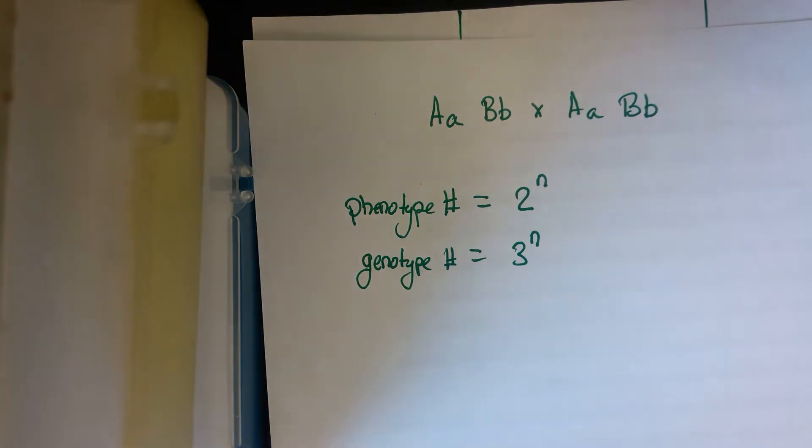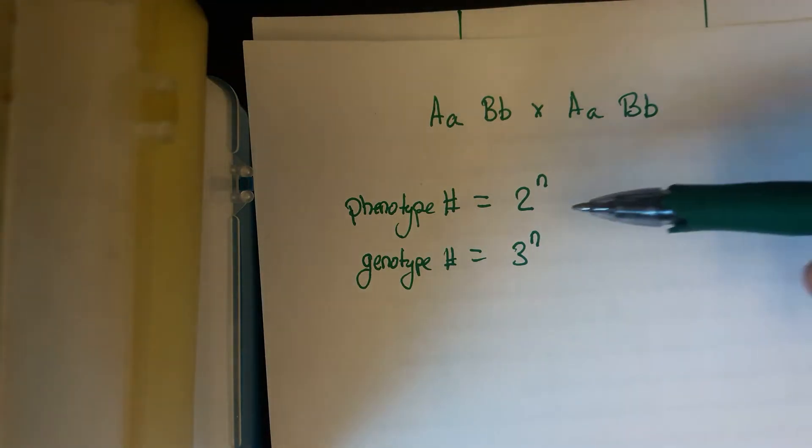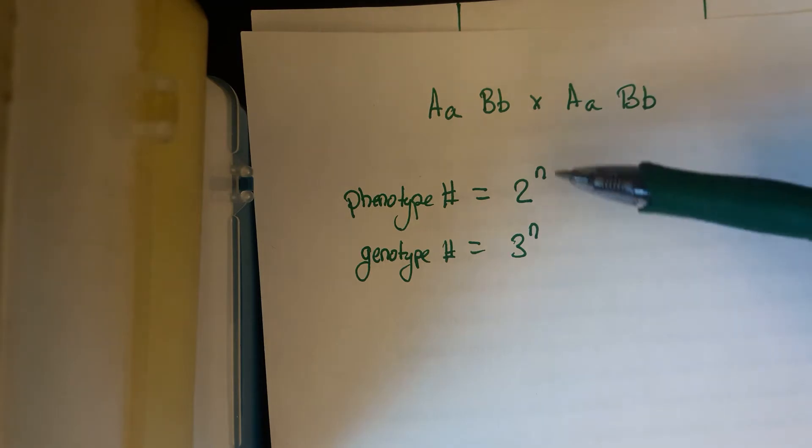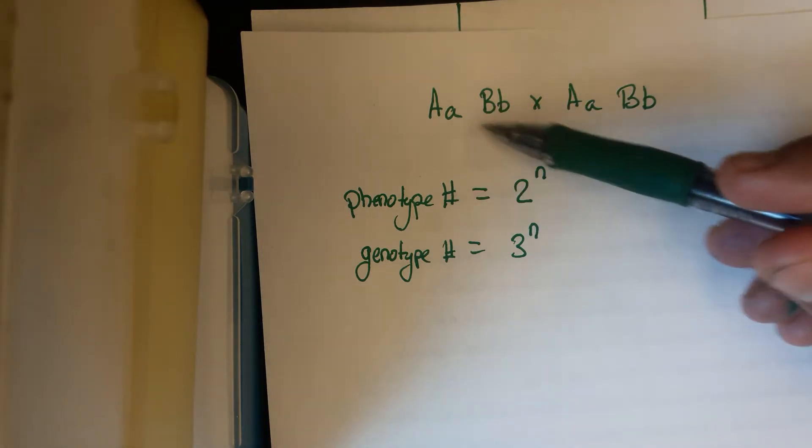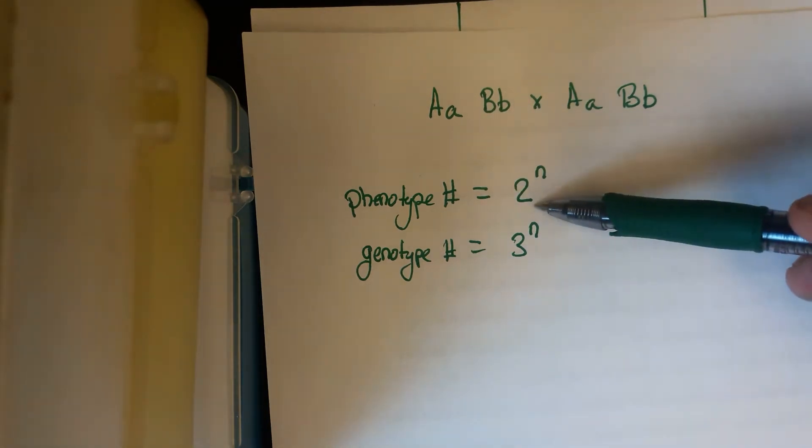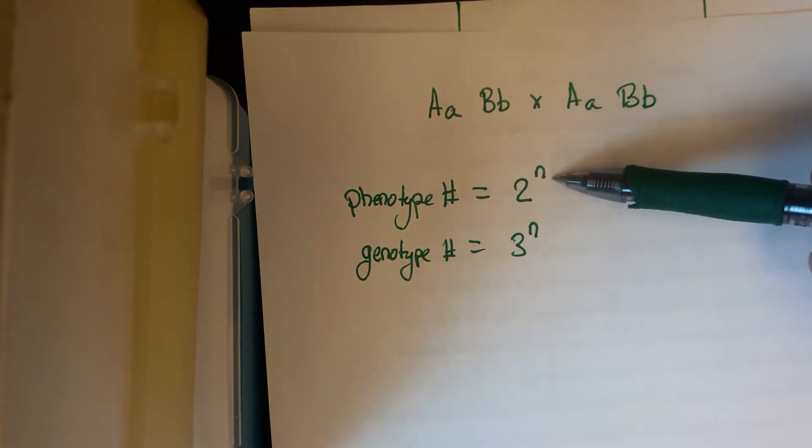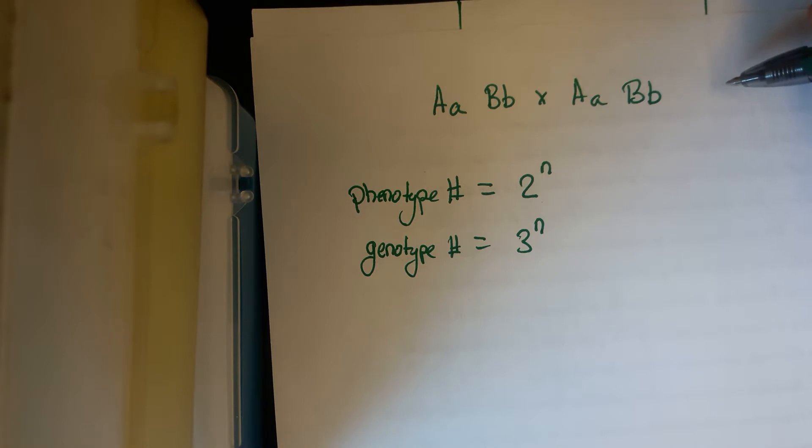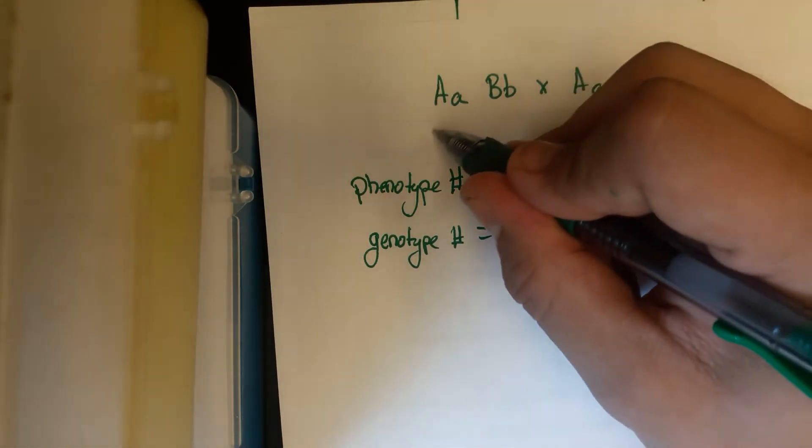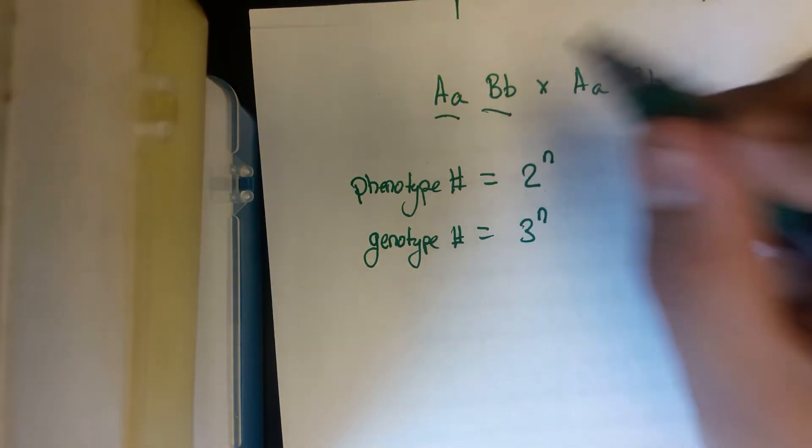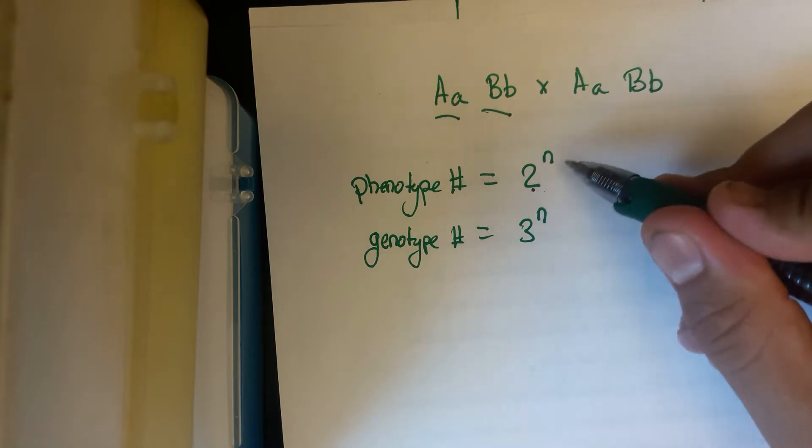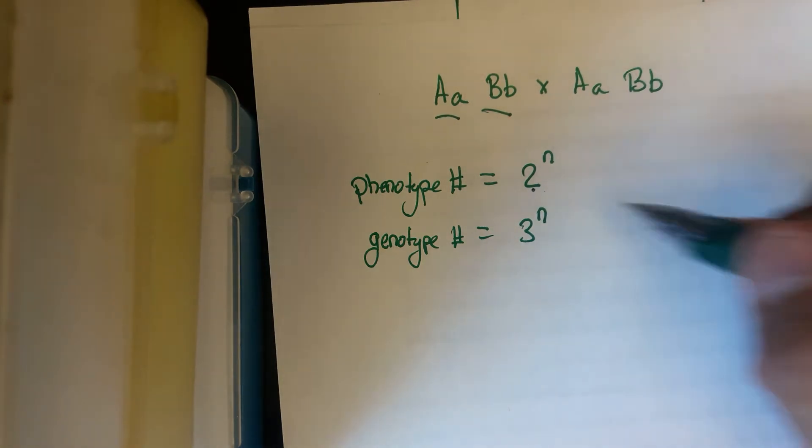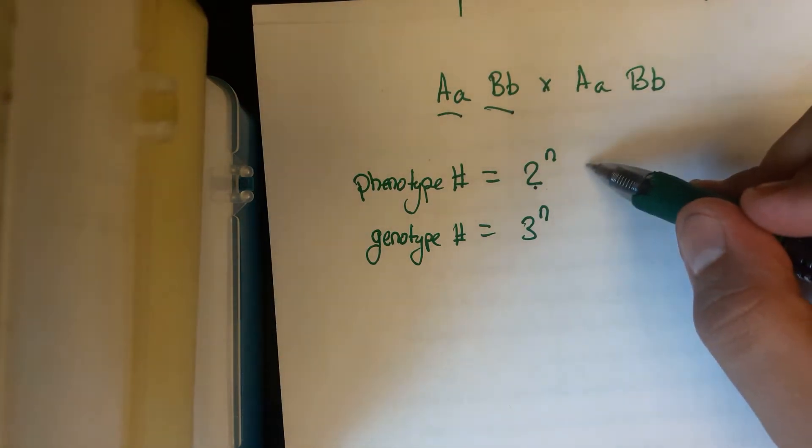So big A little a, big B little b times the same thing. And we're trying to figure out the number of possible phenotypes and the number of possible genotypes. Now in your book you guys have seen this kind of formula where the number of phenotypes that is possible is supposedly two to the power of n, where n is the number of loci that are involved in the cross. So there's one loci, there's a second loci. So two to the power of two is two times two, so that's four. So there's four possible phenotypes.